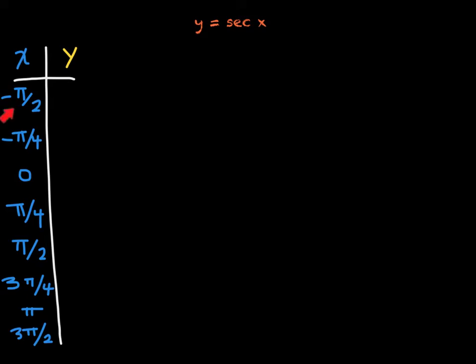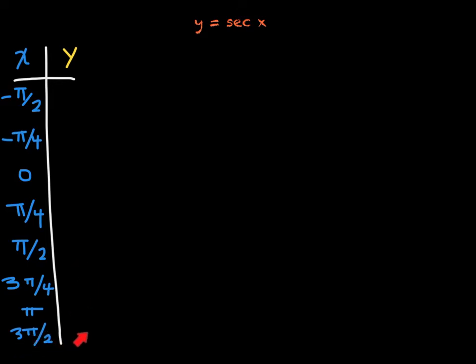I'm starting with negative pi over 2 going all the way to positive pi over 2 and beyond to 3 pi over 2. One thing to keep in mind is that the secant function is undefined at any odd multiple of pi over 2. So at negative pi over 2, pi over 2, and 3 pi over 2, it will be undefined, which means there will be a vertical asymptote at each of those locations.